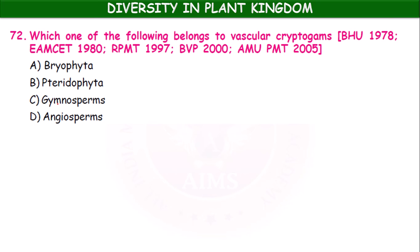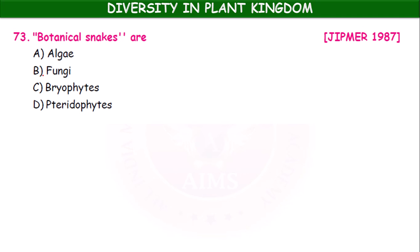Which of the following belongs to vascular cryptogams? Bryophytes, pteridophytes, gymnosperms, angiosperms — the answer is pteridophytes, which are called vascular cryptogams. Botanical snakes — algae, fungi, bryophytes, or pteridophytes? Pteridophytes are called botanical snakes.